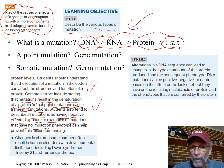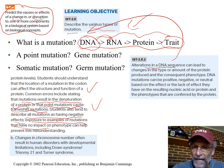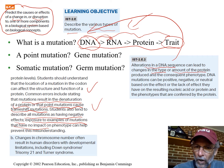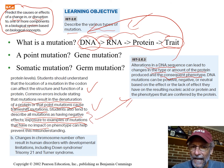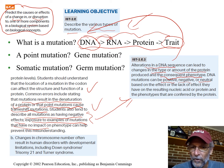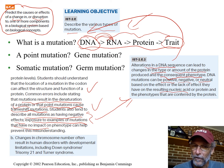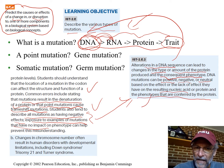Alterations in a DNA sequence — which is what a mutation is — can change the type of protein made, or maybe the amount that's made. That gets into regulation: maybe you change one of the proteins involved in causing more or less of a protein to be made, changing the consequent phenotype. DNA mutations can be helpful, harmful, or neutral based on their effect on the resulting nucleic acid — the RNA — or the protein and the phenotypes conferred by that protein.